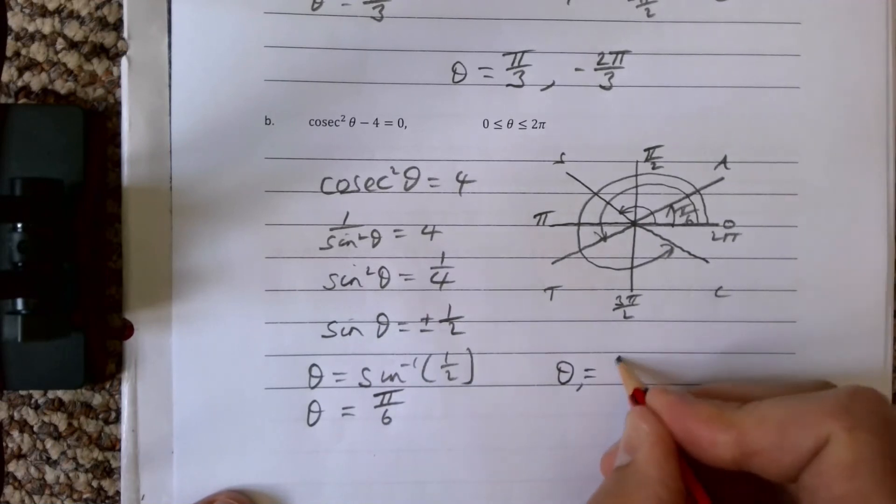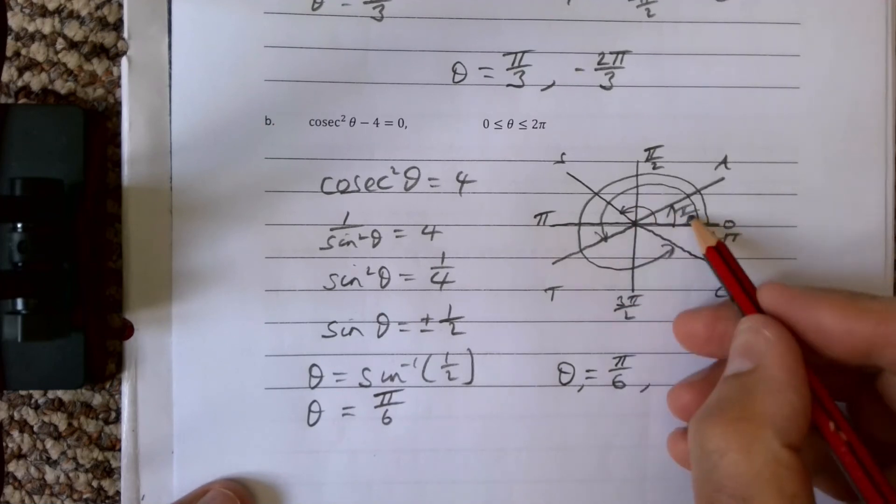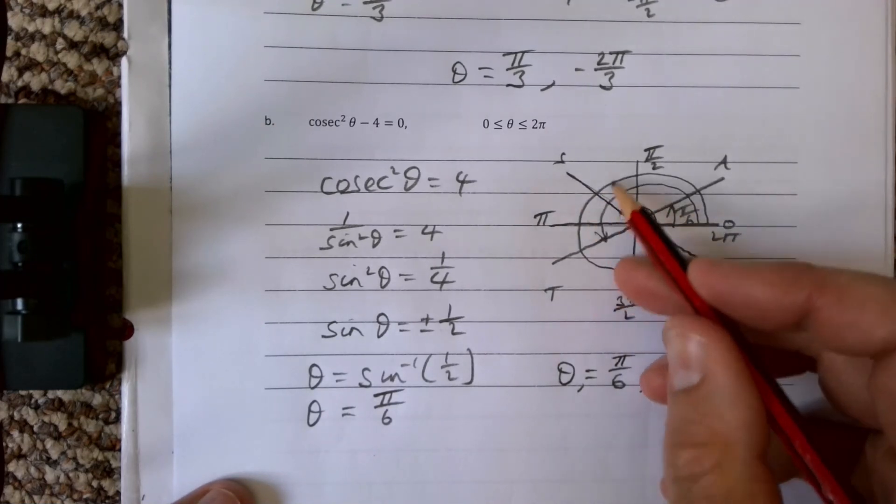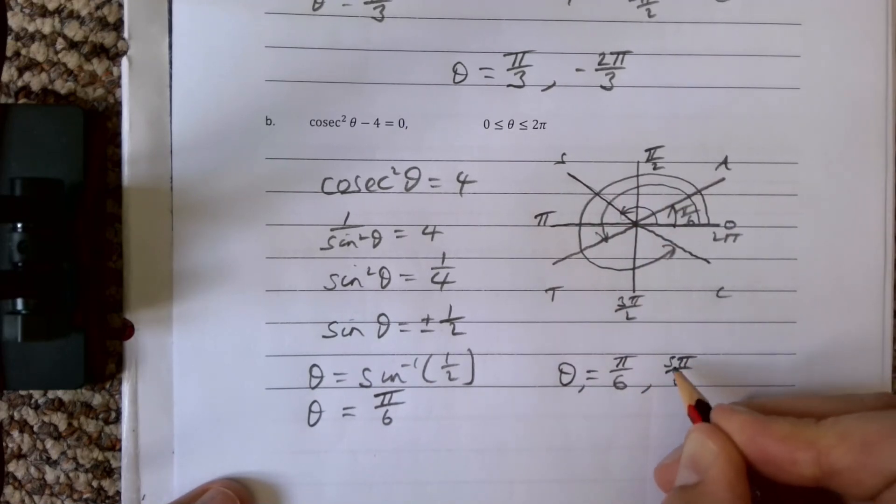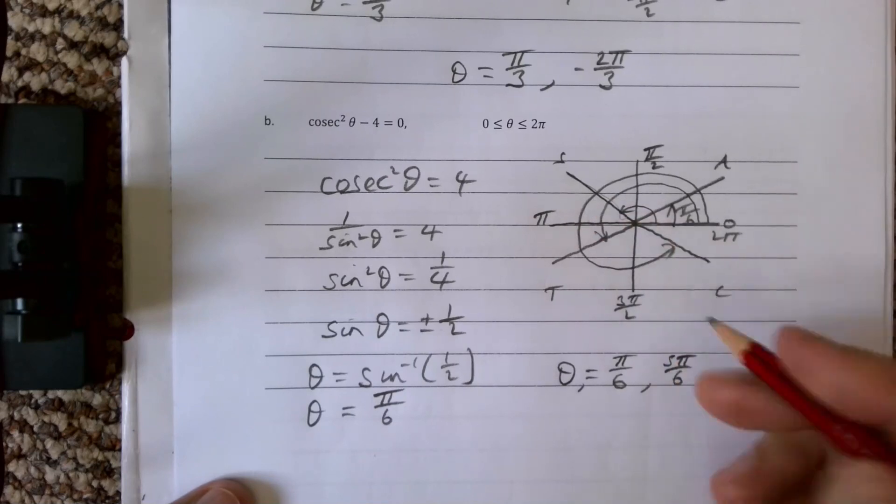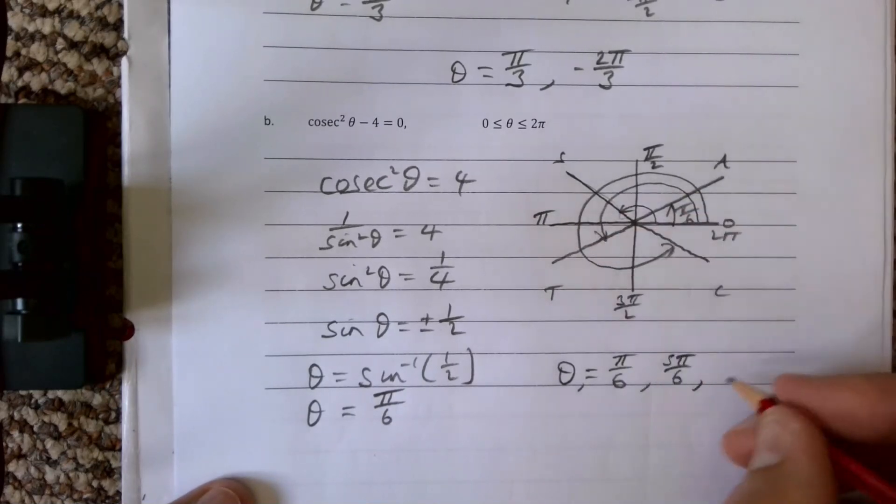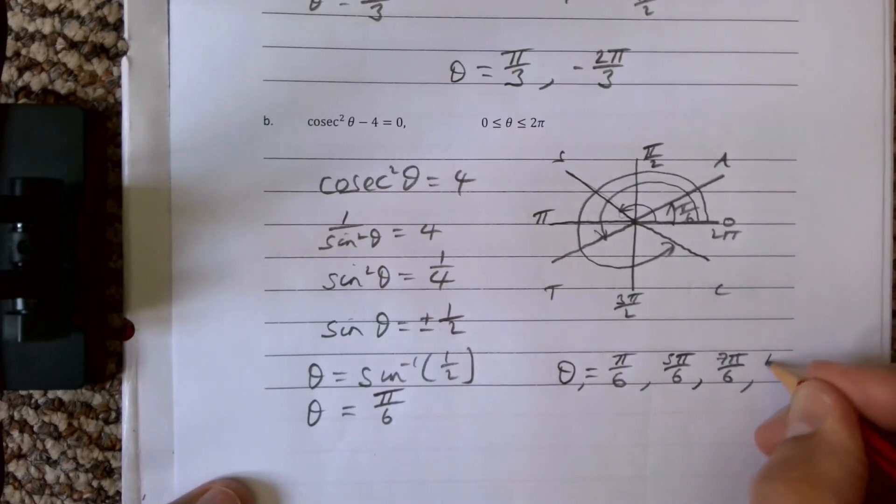The four values that I get for this one is: theta equals π over 6, and we're looking for this one here, so it's 5π over 6 because you're taking π over 6 away from π. Then this one is going to be 6π over 6 plus 1, so 7π over 6, and then my final one is going to be 11π over 6.